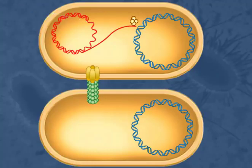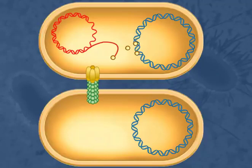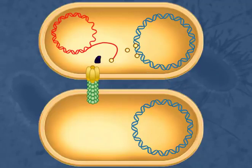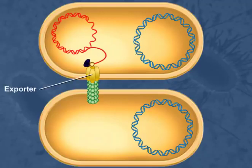Accessory proteins of the relaxosome are released, but a portion of the relaxosome called the relaxase remains attached to the T-DNA. This T-DNA relaxase complex is recognized by a coupling factor and transferred to the exporter, a complex in the F-plus cell that is contiguous with the pilus.